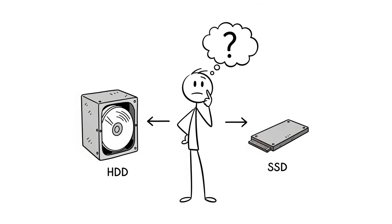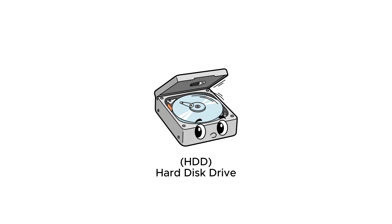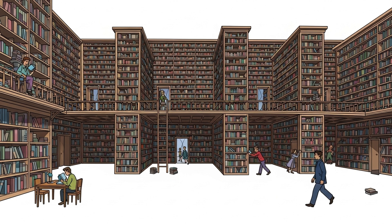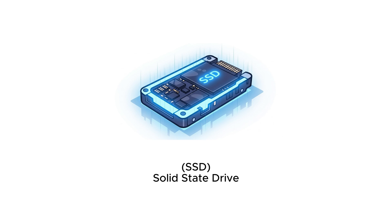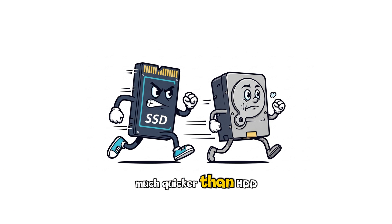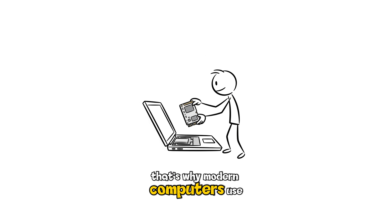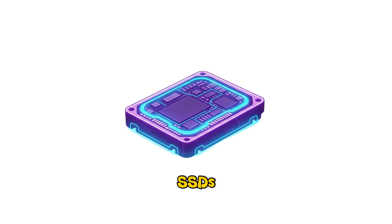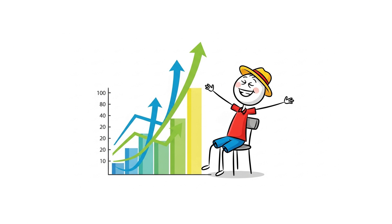There are two main types. HDD, or hard disk drive, works like a big library but is slower. SSD, or solid state drive, works like a super fast locker — much quicker than HDD. That's why modern computers use SSDs, so everything loads faster.